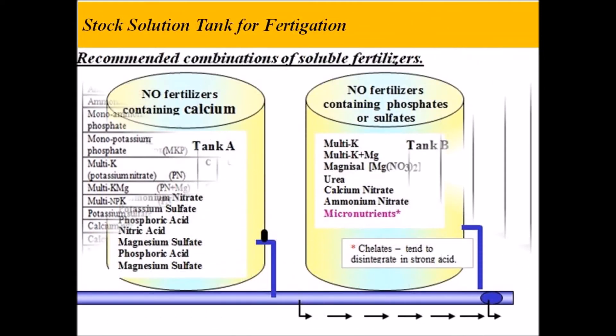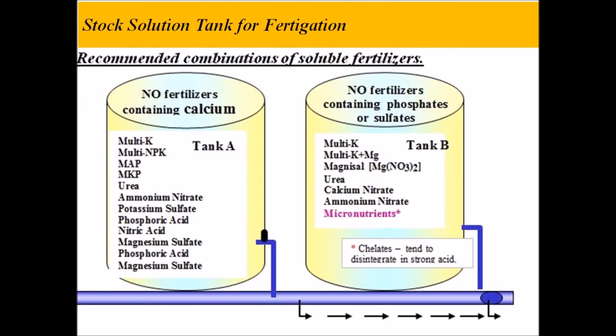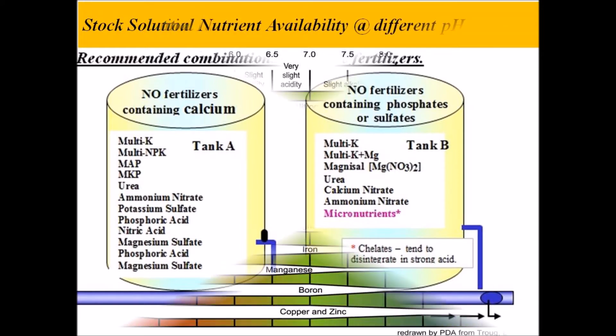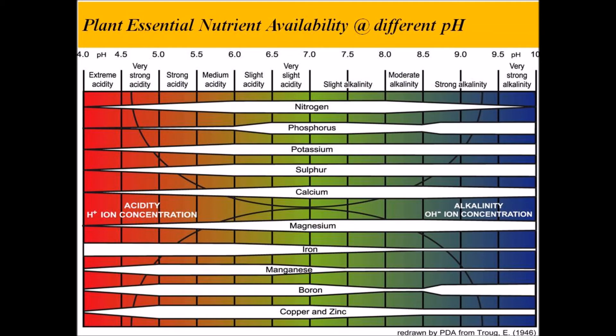In hydroponic crop production you need to maintain fertilizer stock solutions stored in separate tanks. Based on the compatibility of fertilizers, you need two different sets of tanks for mixing fertilizers, and a third tank for storing your acid.